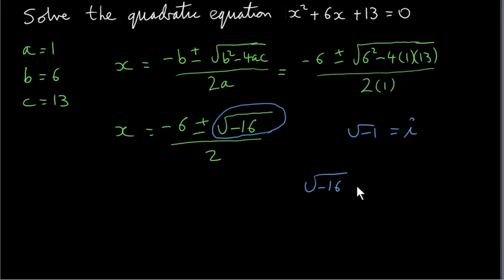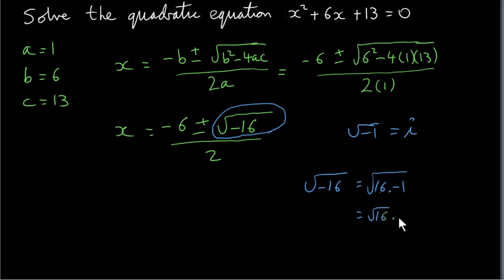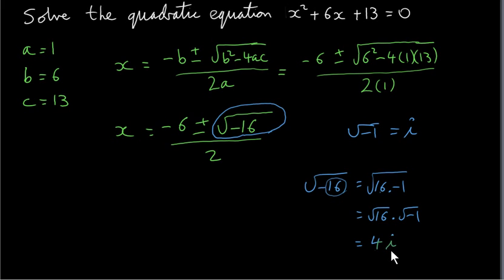We can write the square root of minus 16 in terms of the square root of minus 1, or i. The square root of minus 16 is the square root of 16 times minus 1. We factorize minus 16 as plus 16 times minus 1, then take the square root of each factor. The square root of 16 is 4, and the square root of minus 1 is i. So we can write the square root of minus 16 as 4i. Basically, you get the square root of the positive number and write i after it.